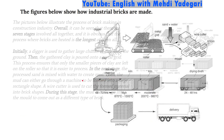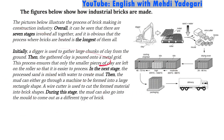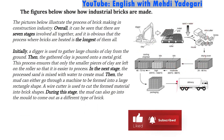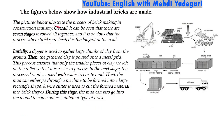We have a brief summary of how this picture can be written: 'The pictures below illustrate the process of brick making in the construction industry.' Paraphrasing overall: 'It can be seen that there are seven stages involved altogether, and it is obvious that the process where bricks are heated is the longest of them all.' So not only have we written how many stages there are, we've also written about the most significant feature — the longest, biggest, most substantial element.